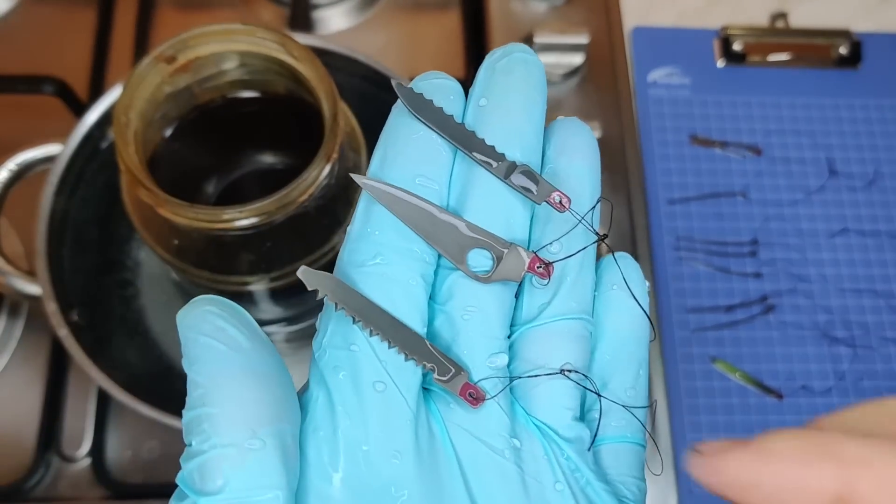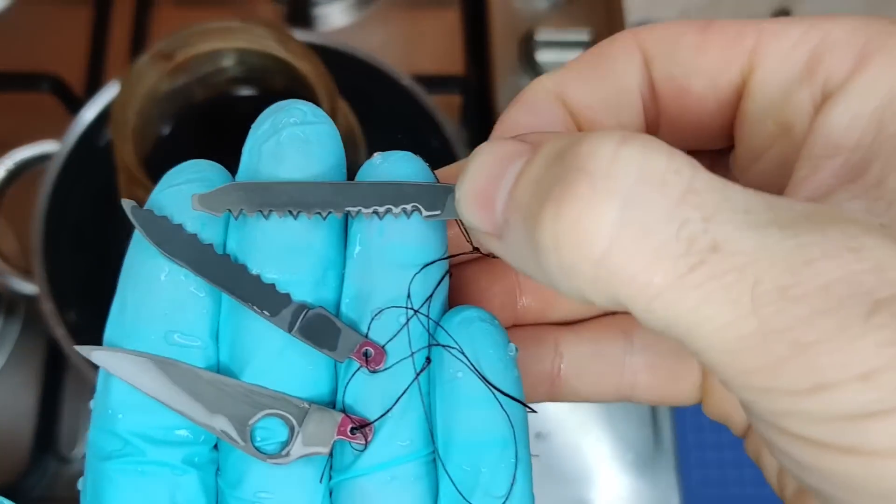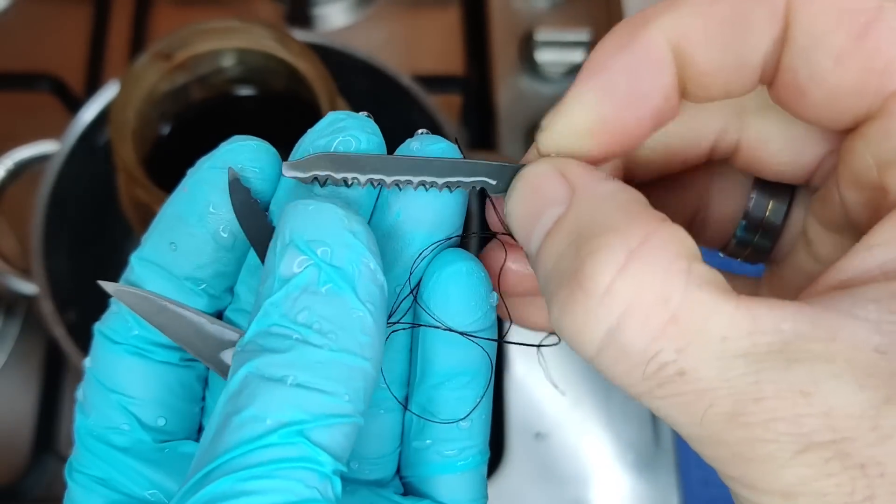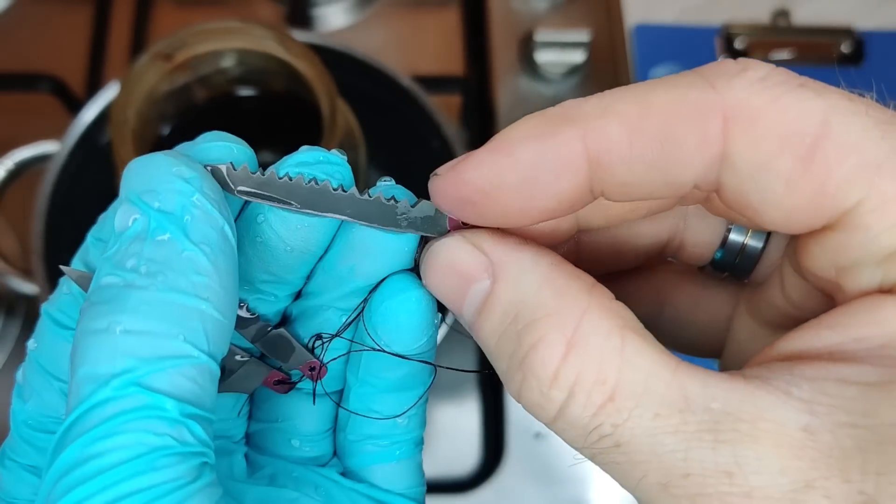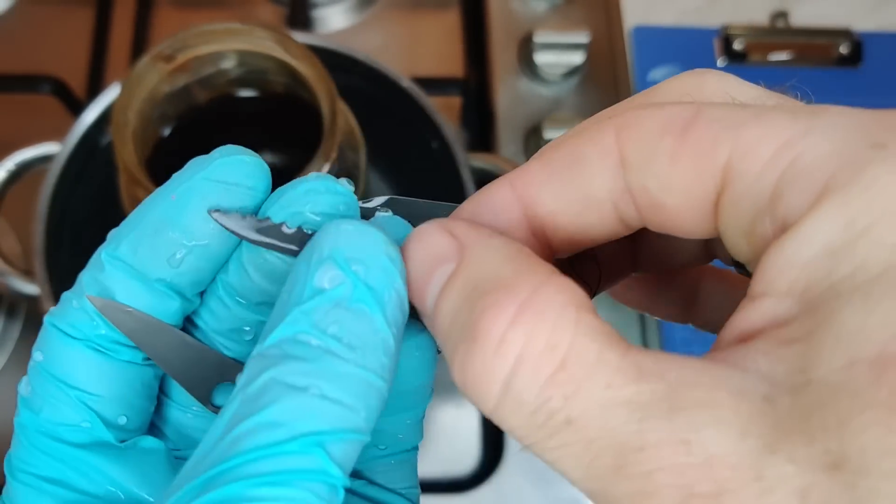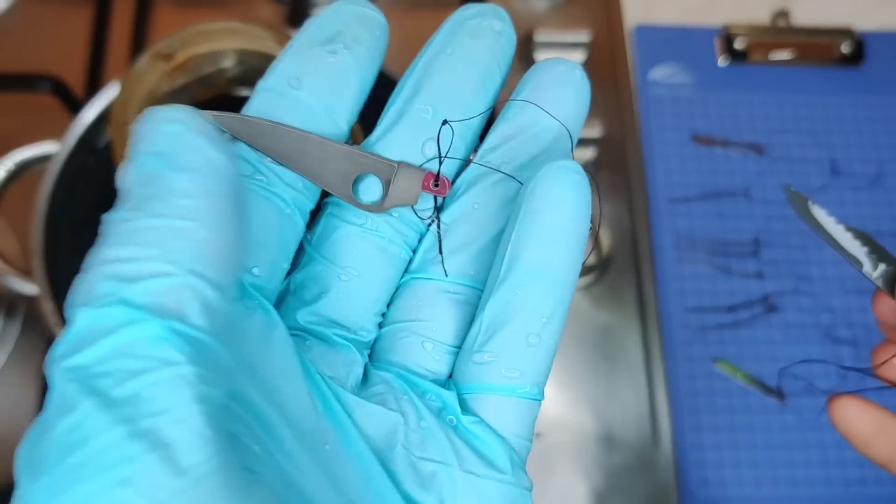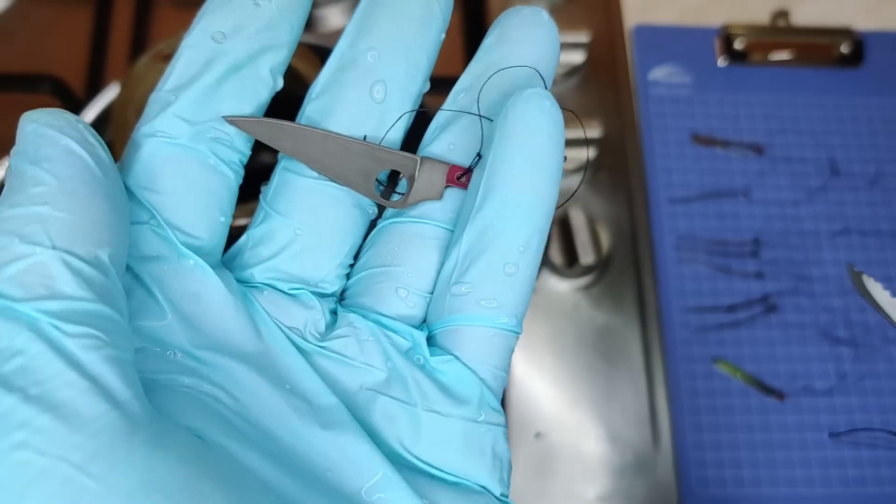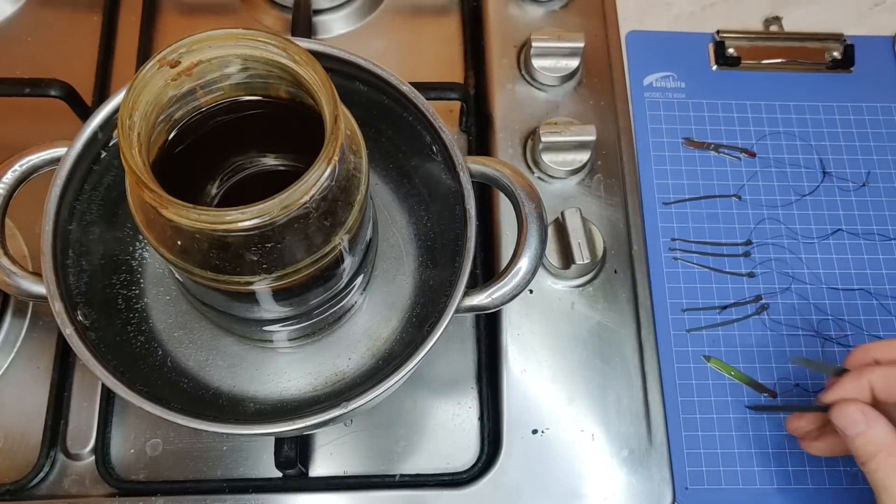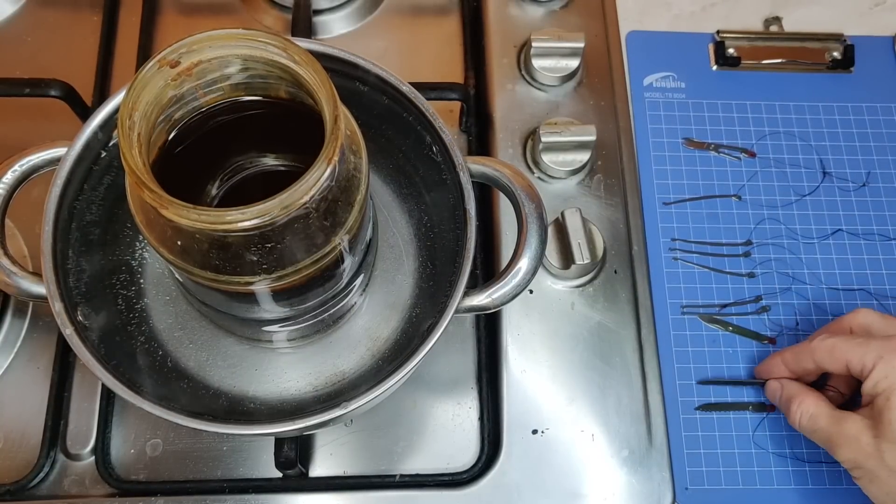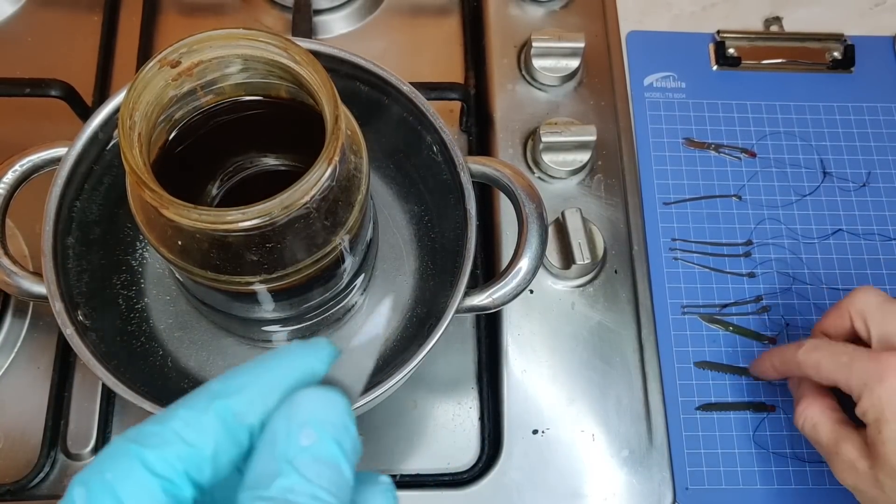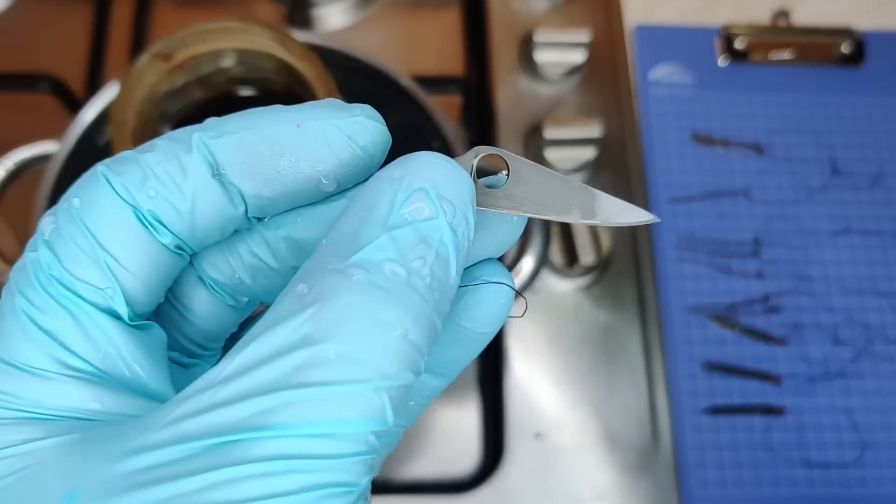Alright, so this is what they look like after I rinse them off. So you can see the saw looks pretty good. And the serrated blade also looks nice and dark. And it looks like the Spyderco blade's going to need another round in the acid. But I'm going to go ahead and continue this process off camera. And then once I'm done with the etching, then I'll show you how it's turning out.